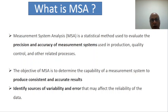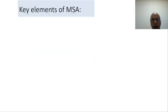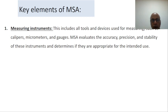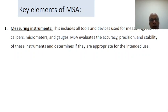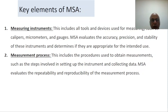There are three key elements of MSA. The very first one is the measuring instrument itself, which we are using in our measurement process — like caliper, micrometer, and different types of gauges. MSA evaluates the accuracy, precision, and stability of these instruments and determines if they are appropriate for the intended purpose.